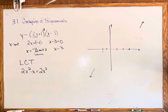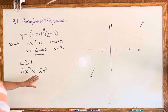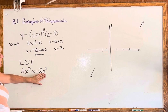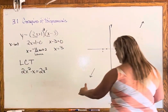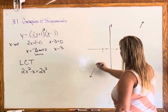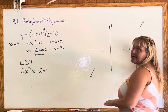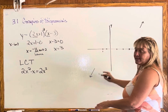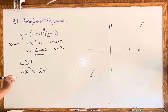Okay, leading coefficient test again. We have 2x cubed and then a bunch of other terms, so because that's 2x cubed it means our graph is going to look like x cubed, which means on the left side we're going down and on the right side we're going up. It's going to have that squiggle form of our base graph. That shape comes from the leading coefficient.